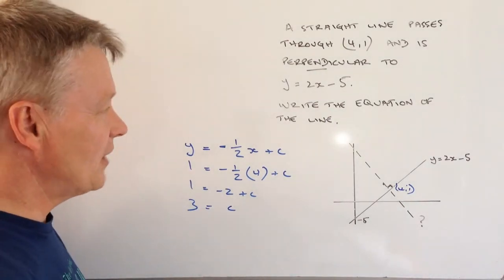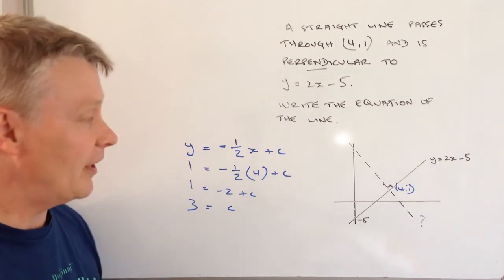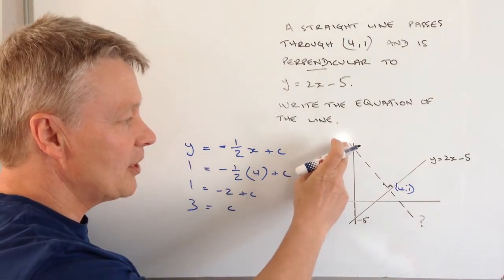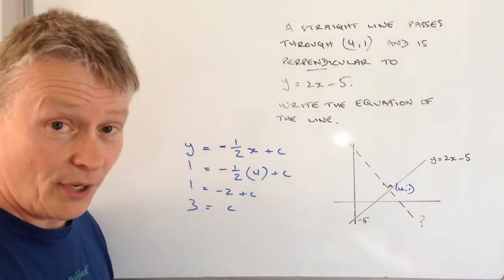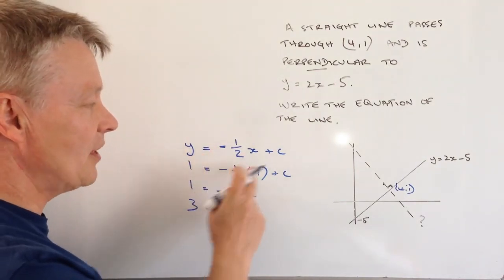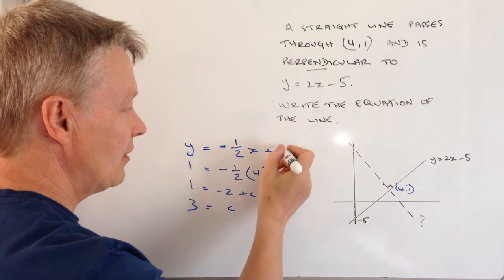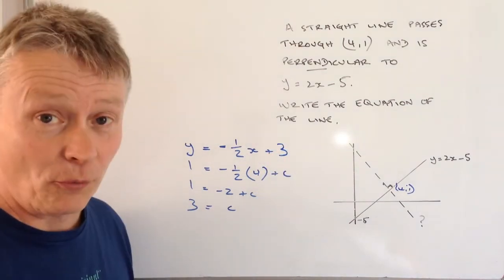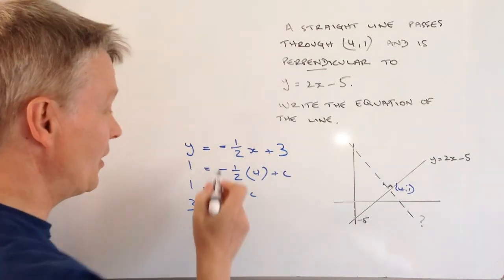So that's great. I can just stitch this together now. And it tells me that the equation of this line, which is perpendicular to it, is going to be y = -1/2x + 3. And that will be the answer to this question.